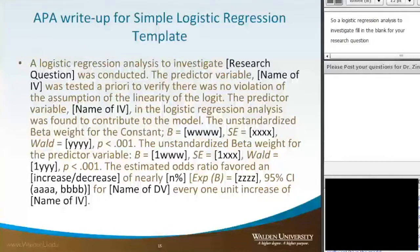The predictor variable was tested a priori to verify that there was no violation of the assumption of the linearity of the logit. The predictor variable, fill in the name of your variable, in the logistic regression analysis was found to contribute to the model. The unstandardized beta weight equals WWW, standard error equals XXX.